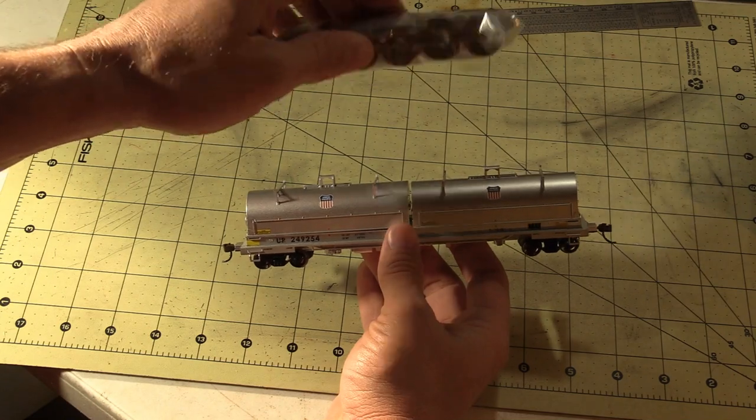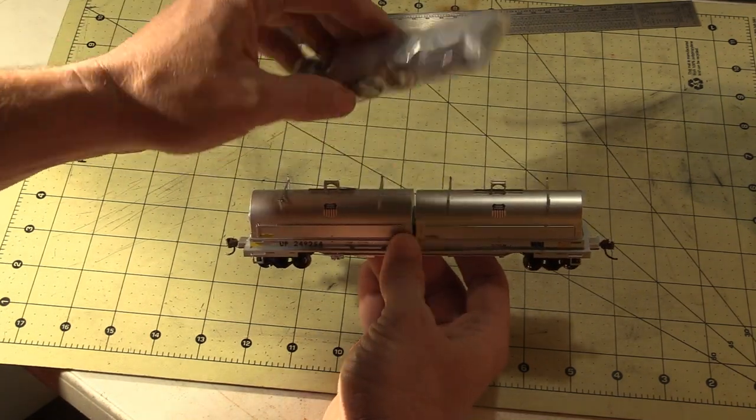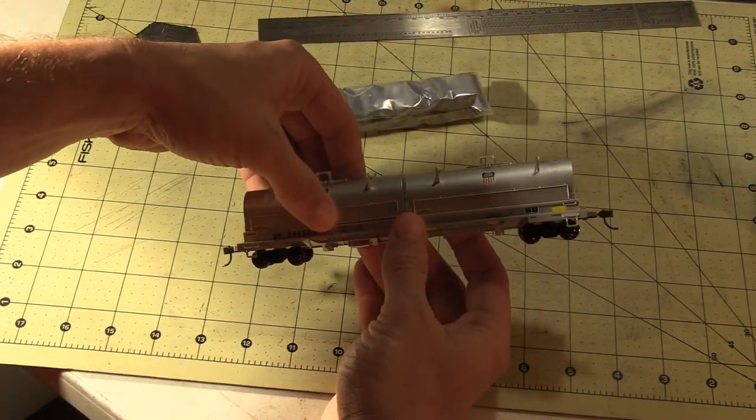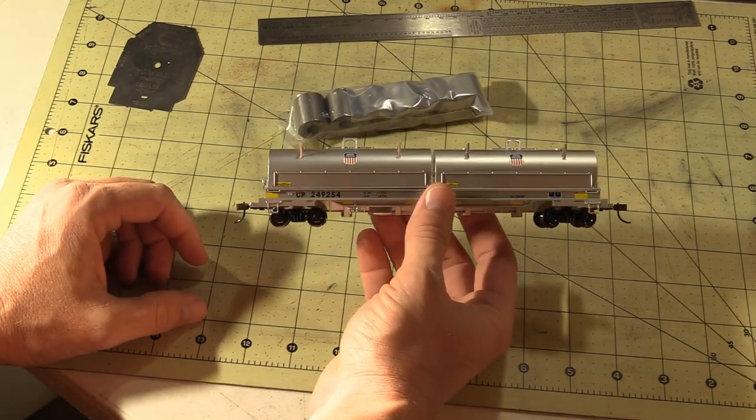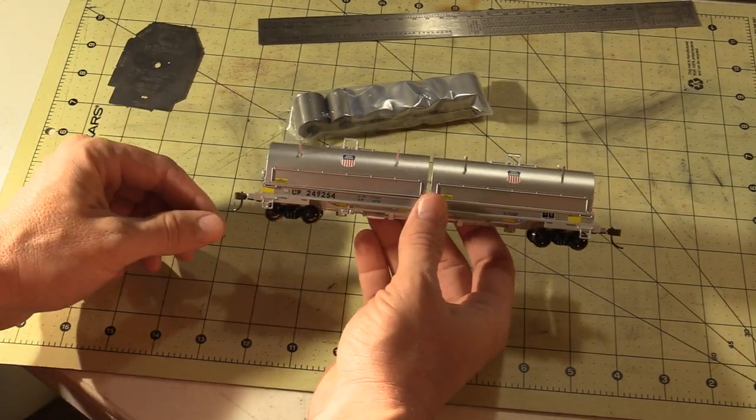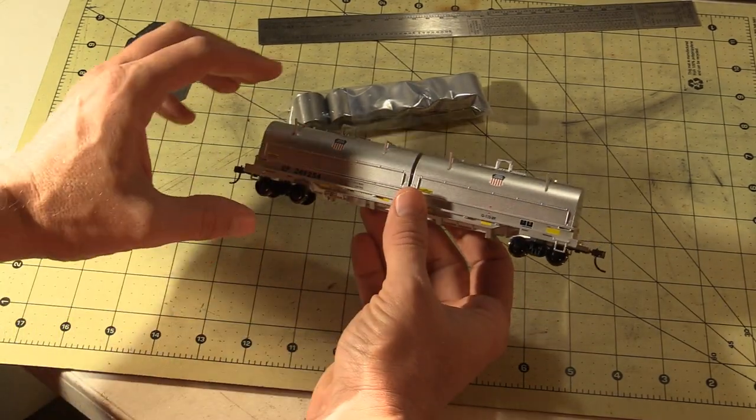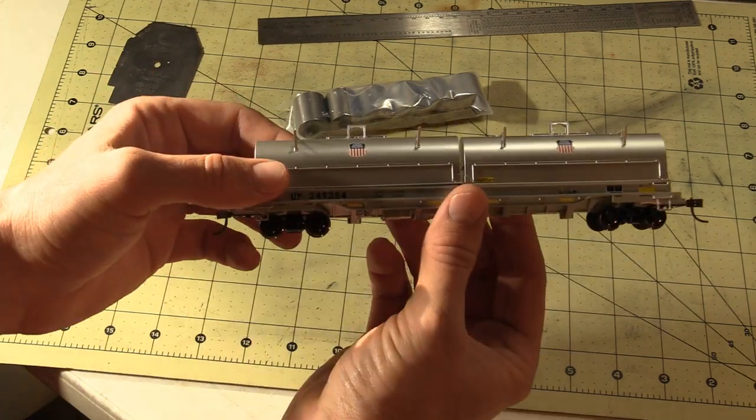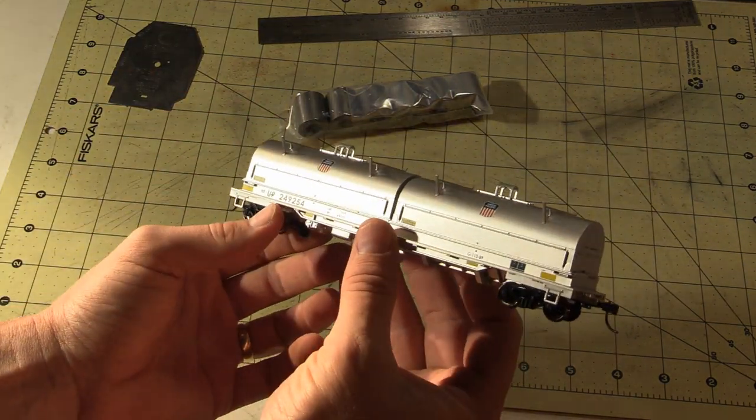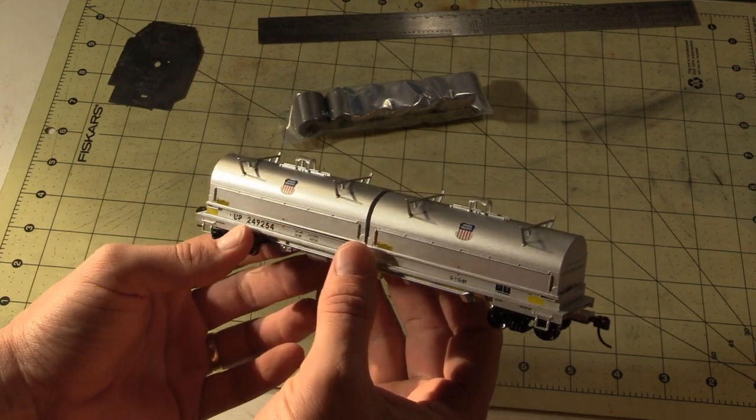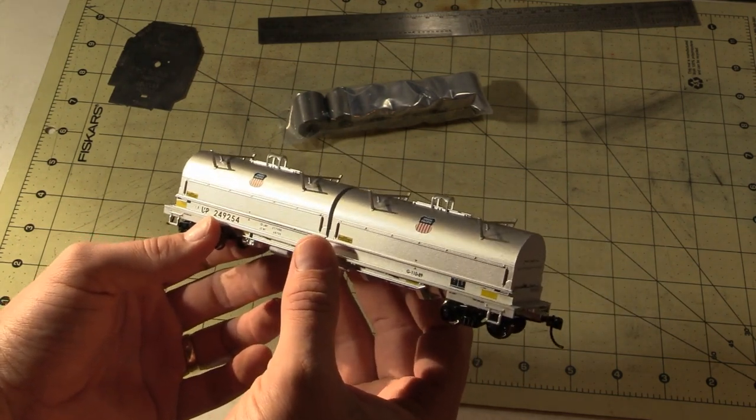I will say just from initially holding this model, I can tell it's pretty lightweight, but the steel coils have a little bit of weight. So I'm guessing once you put those inside the car, then it will probably be pretty close to the NMRA standard. The initial look here, if we look up kind of close,